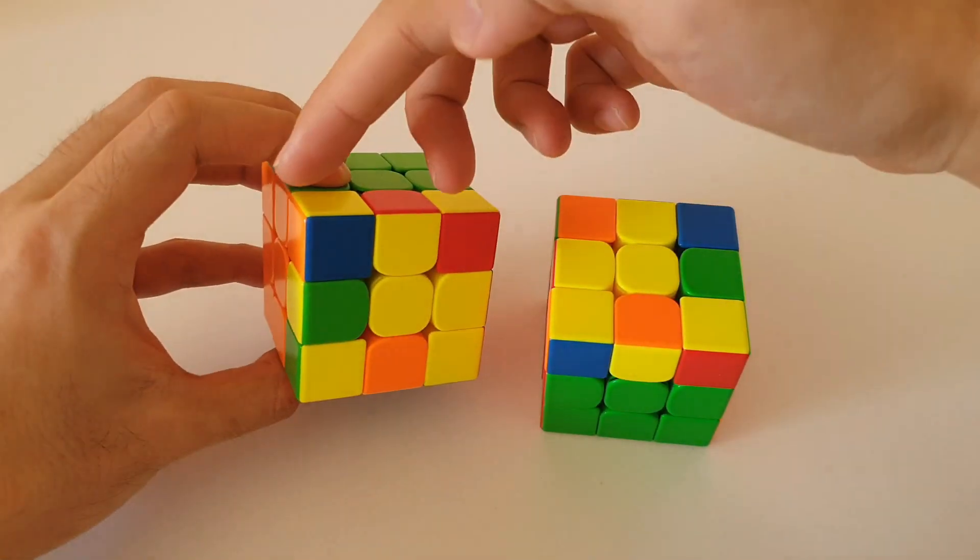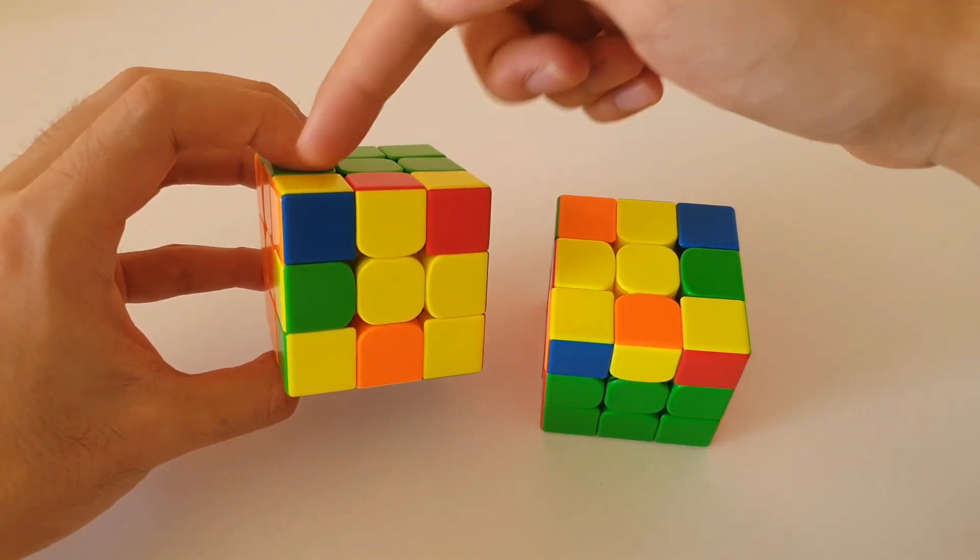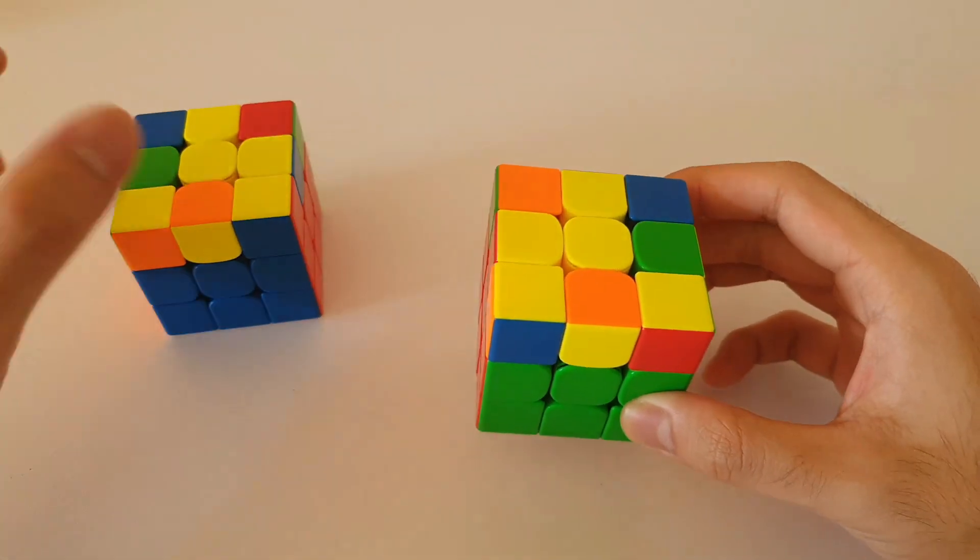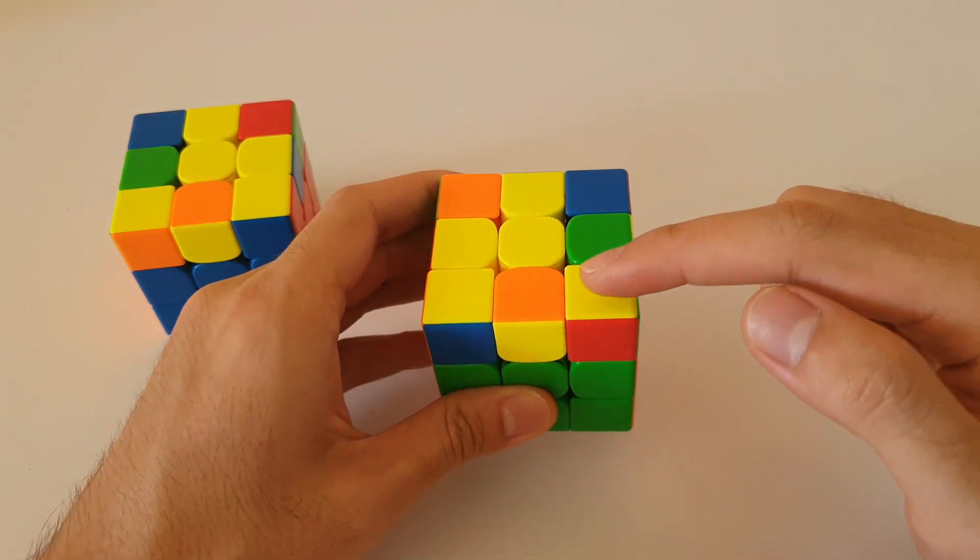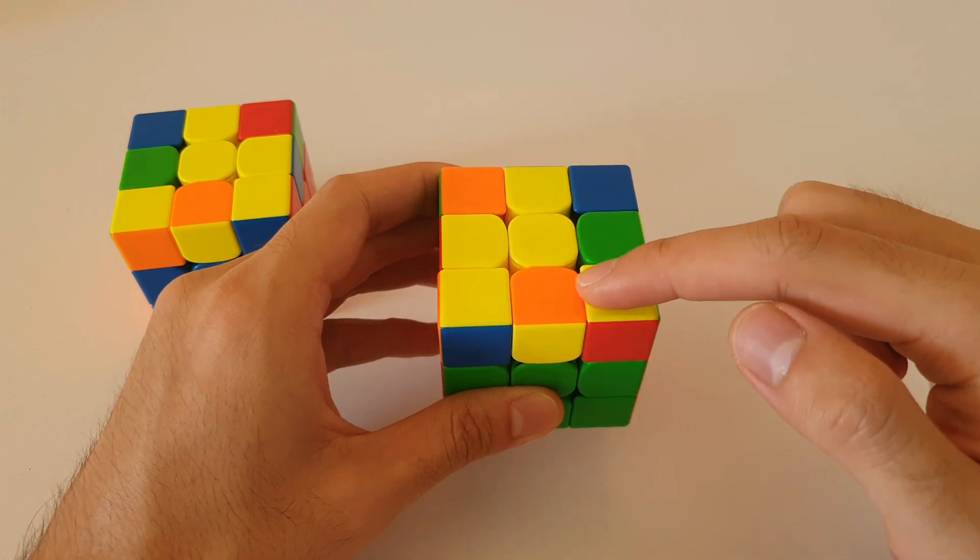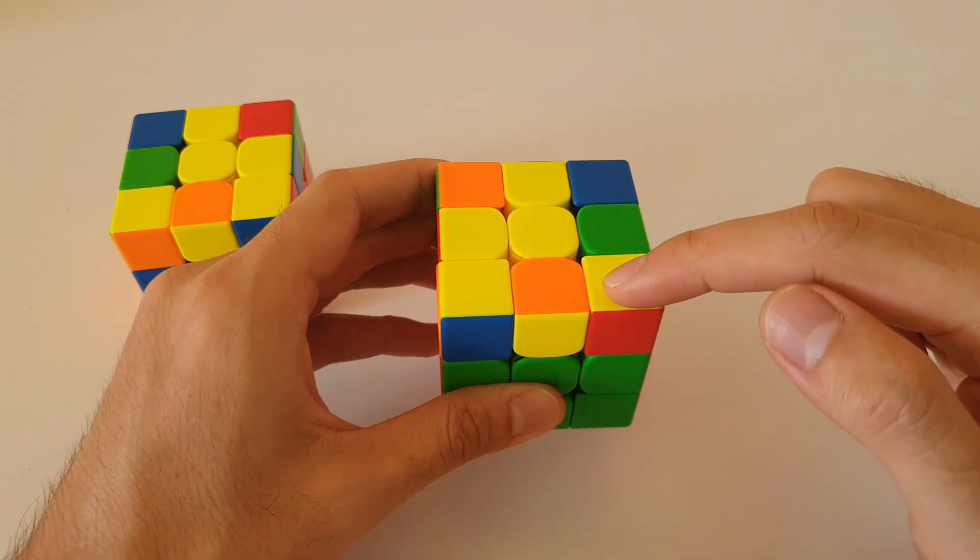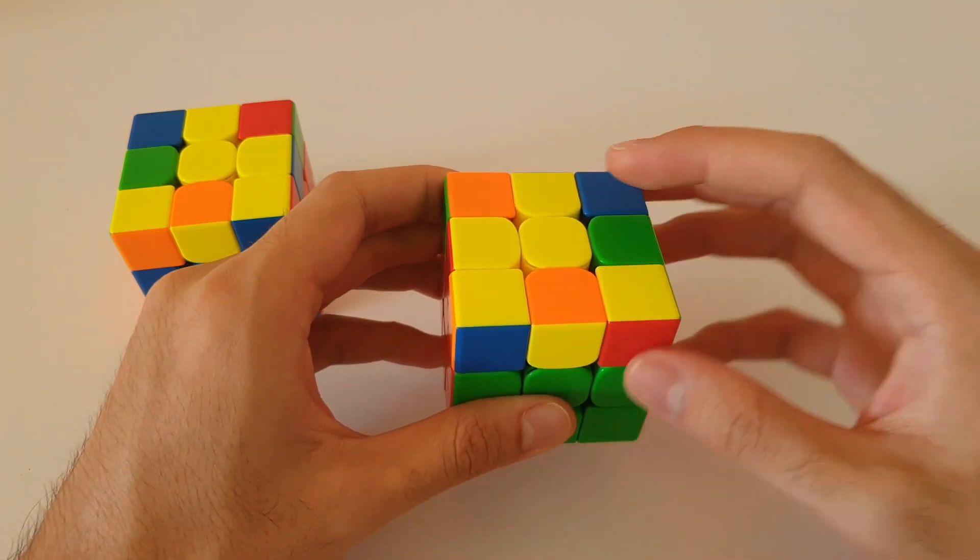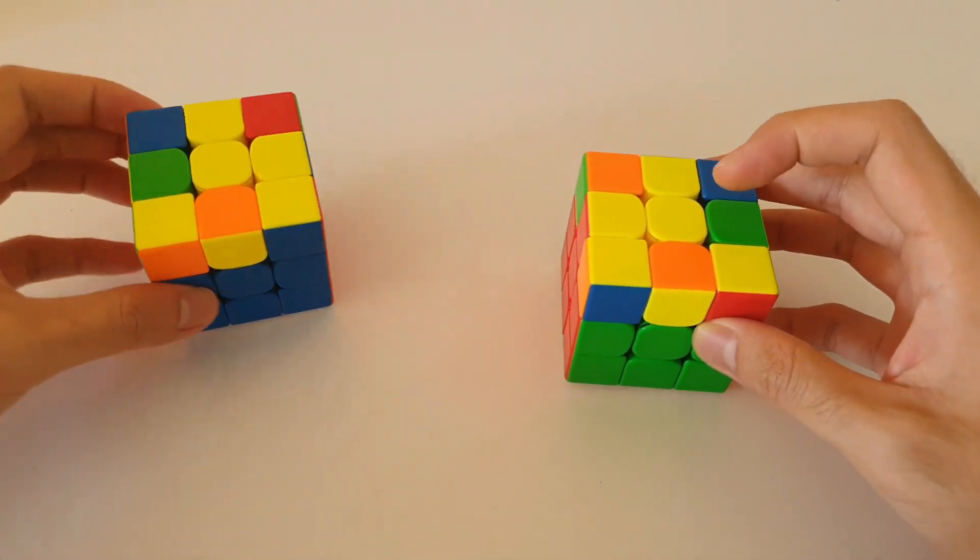So once again, we want to hold these headlights which is pairs of matching corner colors towards the back. Next up, we want to see where the single corner is. So in this case, our single corner is on the front right which means that this is the right-handed algorithm.